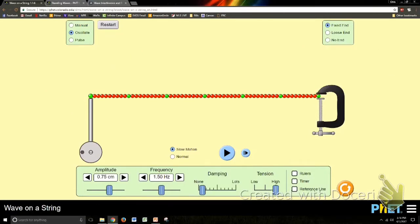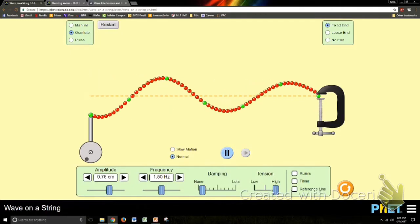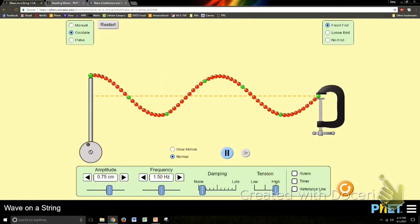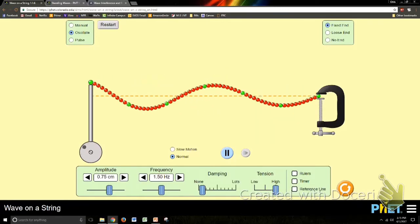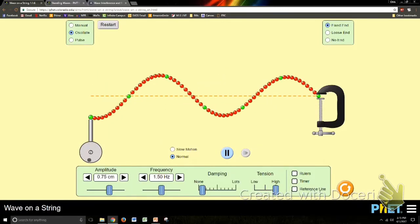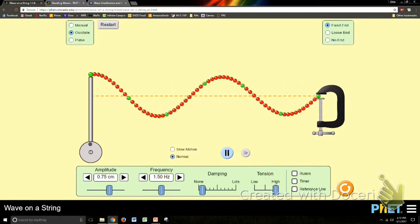As they start interfering with each other, you should start to see a little bit of a standing wave there. It looks like there's not a single pulse that you can actually discern heading from the oscillator over to the clamp.